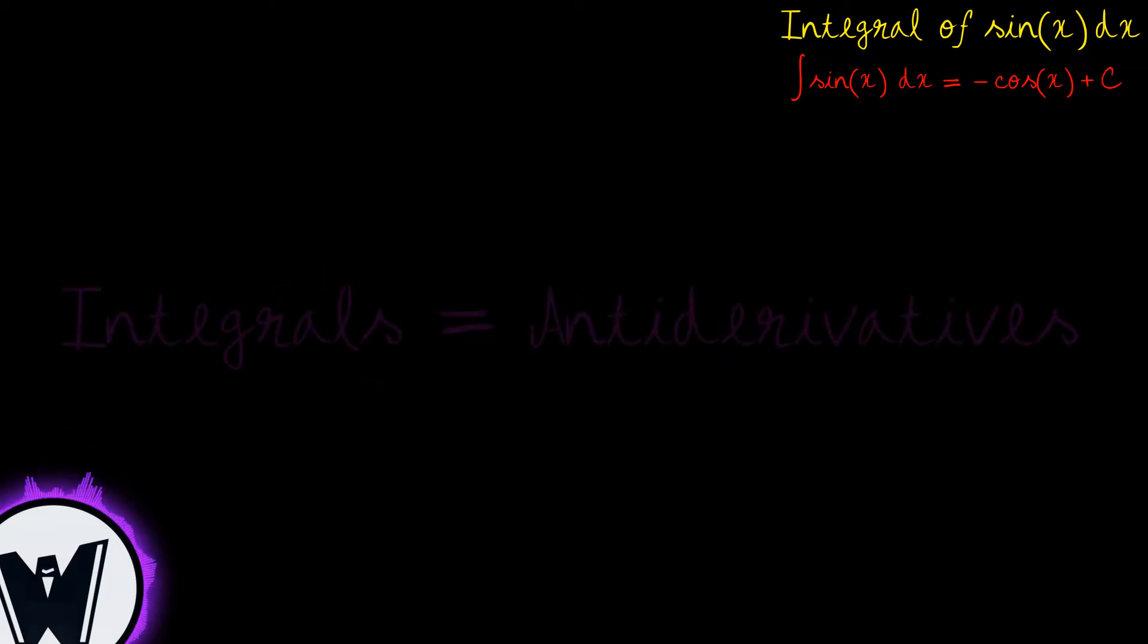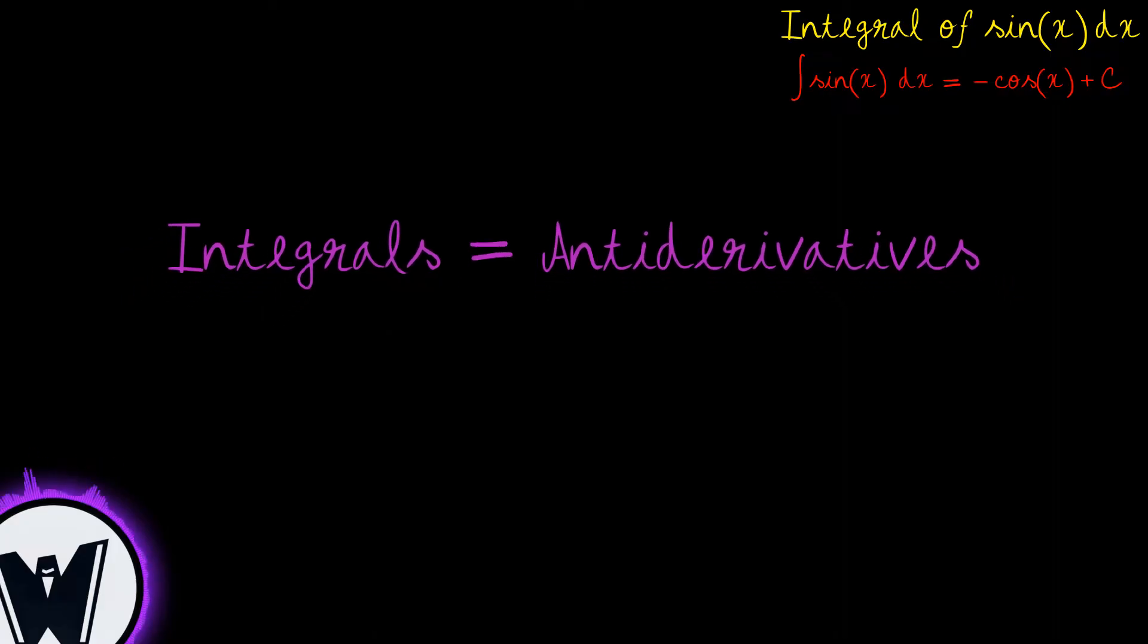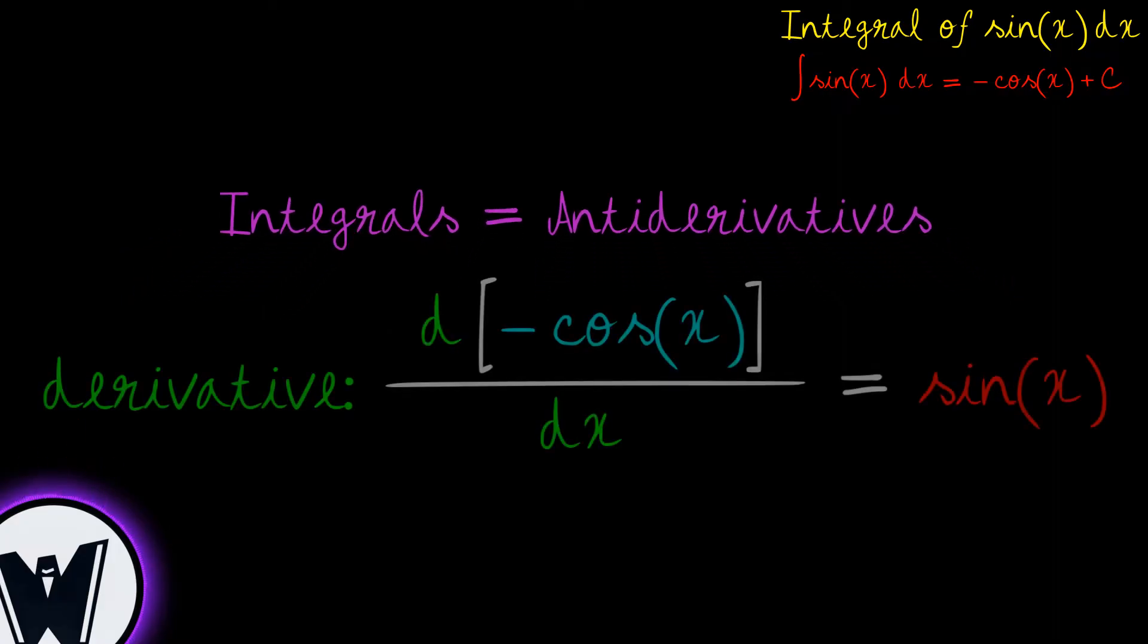One of the other designations for integrals is antiderivative, which is the opposite operation of a derivative. So, if we take the derivative of negative cosine in relation to x, we will get sine of x.